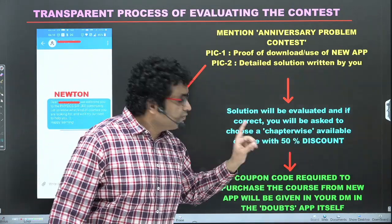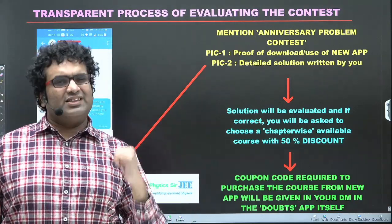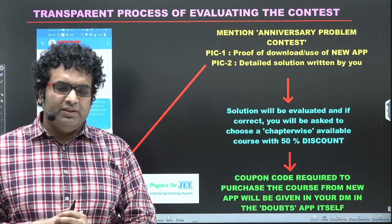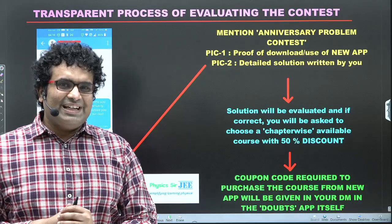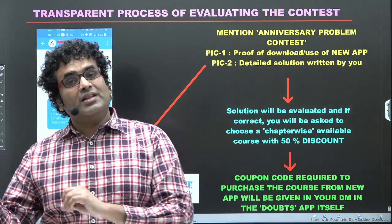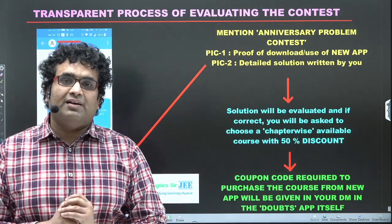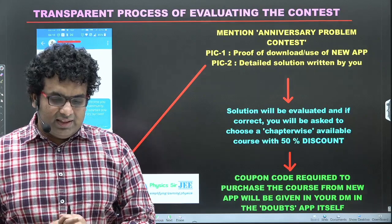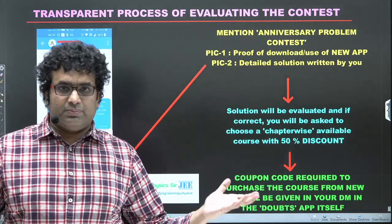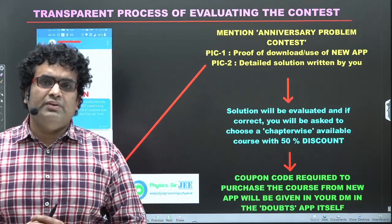The solution will be evaluated and if correct, you will be asked to choose a chapter-wise available course with 50% discount. You might ask why not free — this problem is simpler so I want higher participation, and giving a free course would be disrespectful to the ~40 students out of 200 entries who won last time. I'm expecting more entries now, so I'll keep it at 50% and keep varying the discount percentage depending on the level of the problem.